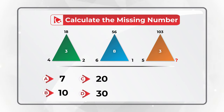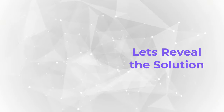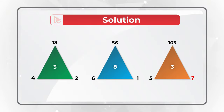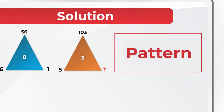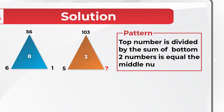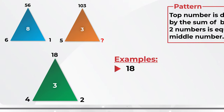Do you see the answer? The solution is very obvious, but I'd like you to try to get to it on your own. One phrase you hear on this channel the most is: always look for patterns. The pattern here is that the top number divided by the sum of the bottom two outside numbers equals the middle number inside the triangle. Let's look at the first example: 18 divided by (4 plus 2) equals 18 divided by 6, which equals 3.